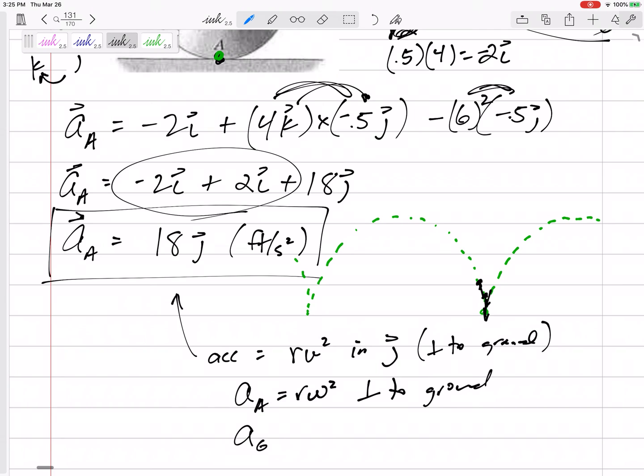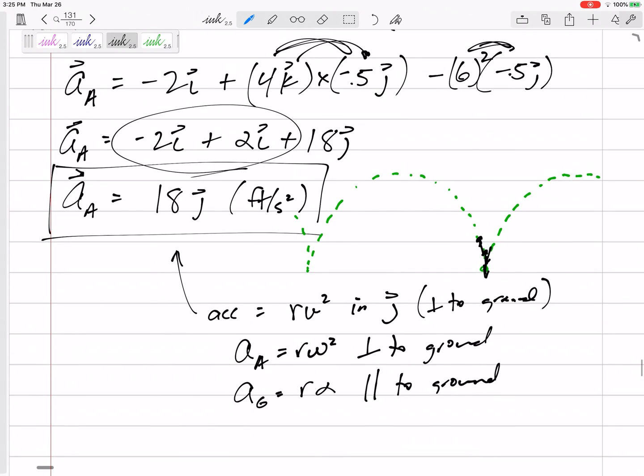The acceleration of the center of gravity is r alpha parallel to the ground. All right, so now we have learned two things. So now we do know two things about a wheel that is rolling without slipping. We know the acceleration of the center of gravity and we know the acceleration of the point that's touching the ground.